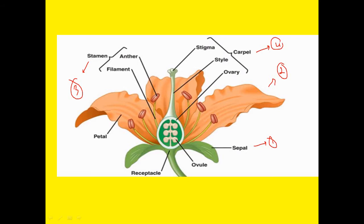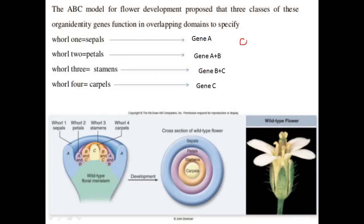This model explains that the formation of these four different whorls is regulated by the expression of three gene classes: A, B, and C. Class A alone regulates the formation of sepals. Class A and B together are responsible for the formation of petals, the second whorl. Class B and C together are responsible for the formation of stamens, the third whorl. And class C alone regulates the formation of carpels, the fourth whorl.